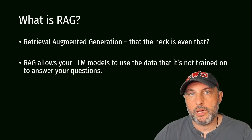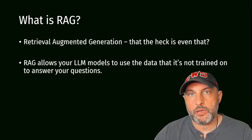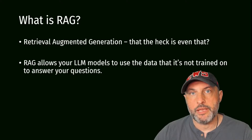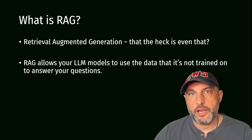First, what is RAG and why do we need it? We need it because out-of-the-box LLMs — for example, ChatGPT — cannot answer questions about recent events. If you ask ChatGPT who is the current Republican or Democratic party nominee for the 2024 election, it won't be able to answer because its data was limited to around April 2023. When you connect in code to ChatGPT or other LLM generative AI models, you're getting a read-only version of those models. RAG architecture allows us to use LLM models to answer questions on data they were not trained on.